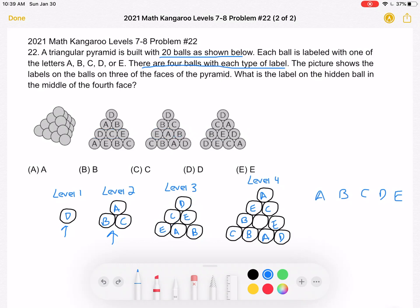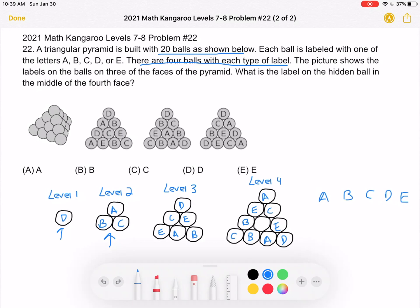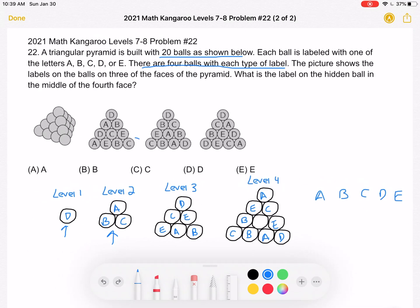So next for level four, if you look at the fourth row, you have A, E, B, C, which I wrote here.